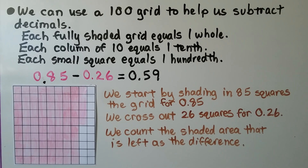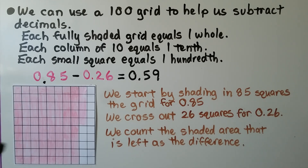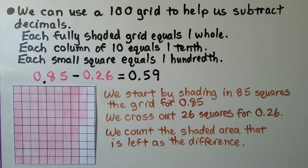We can use a 100 grid to help us subtract decimals. Each fully shaded grid equals one whole, each column of ten equals a tenth, and each small square equals one hundredth.